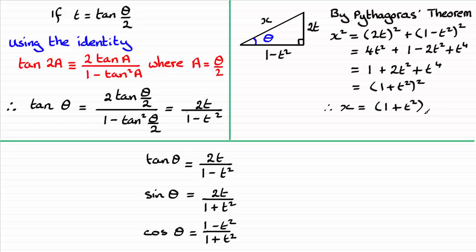So if I was to draw that triangle out again and we'll put that side in, we're going to have this side then as 1 plus t squared, the hypotenuse.